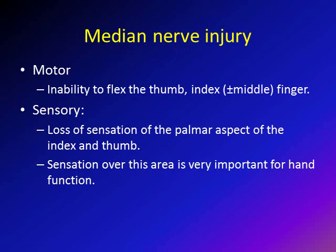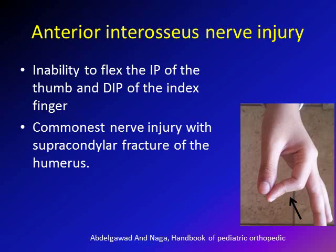The median nerve gives off the anterior interosseous nerve, which is a motor branch. The anterior interosseous nerve controls the muscles that cause flexion of the interphalangeal joint of the thumb and the distal interphalangeal joint of the index finger. This nerve is the most commonly injured nerve in supracondylar fractures of the humerus in children. You assess it by asking the child to do the OK sign — a child with this injury will fail to do so.